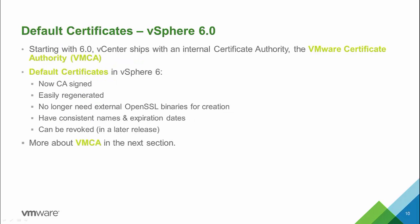With vCenter 6.0 we started shipping an internal certificate authority, the VMware Certificate Authority or VMCA. The default certificates in vCenter 6.0 are now CA-signed, easily regenerated, and no longer need an external OpenSSL binary for creation. They further have consistent names and expiration dates and in a future release can be revoked.